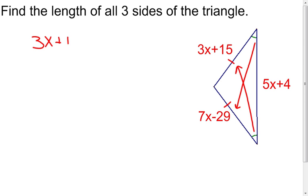Which tells me that the 3X plus 15, that side, and the 7X minus 29 side, those sides will be equal in length. I can solve my equation.